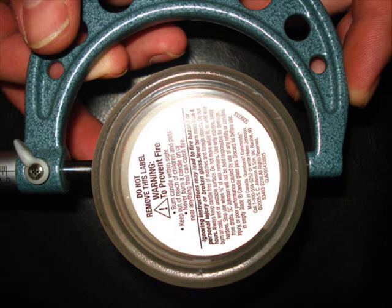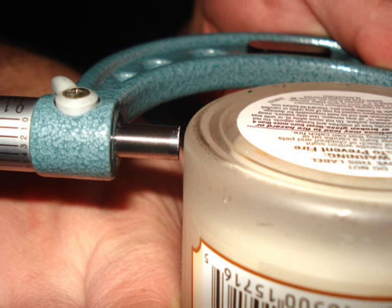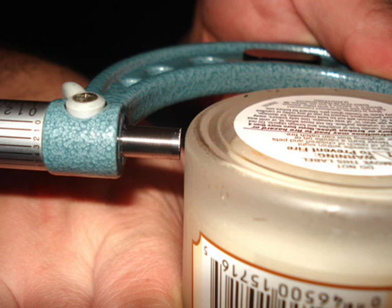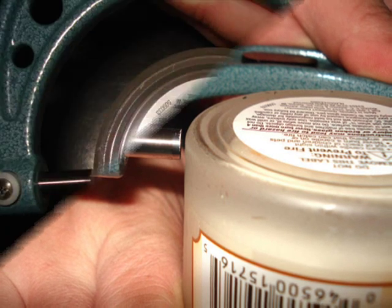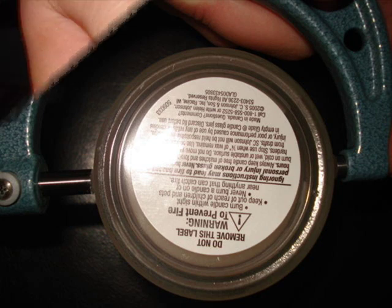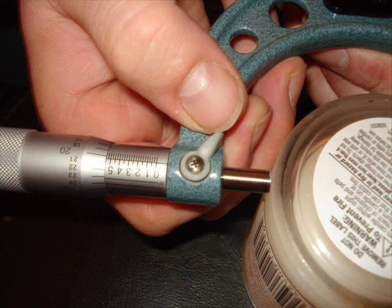Step one: Place the object between the anvil and spindle. Step two: Spin the ratchet until the spindle meets the object. Step three: Verify that both the anvil and spindle are touching the object evenly. Step four: Set the thimble lock while the micrometer is still on the object.